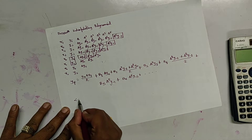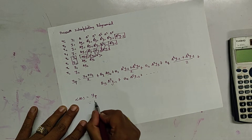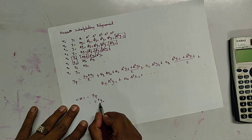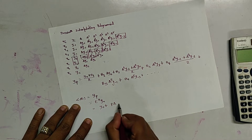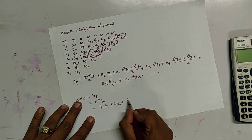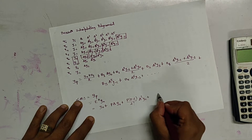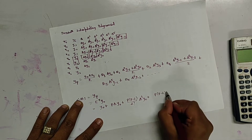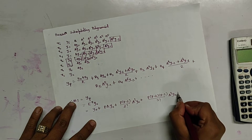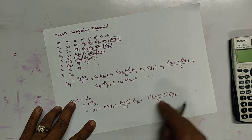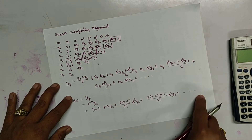LHS equals yp and it is written as E-power-p times y-naught using the shifting operator. We can directly write it as y-naught plus p del y-naught plus p(p-1) over 2-factorial times del-squared y-naught, plus p(p-1)(p-2)(p-3) divided by 4-factorial times del-power-4 y-naught. That was the equation which we get.